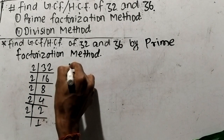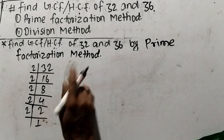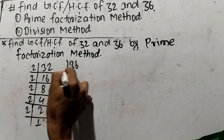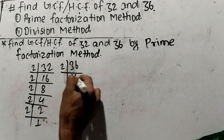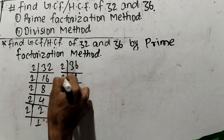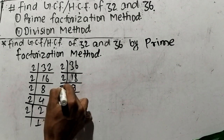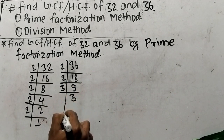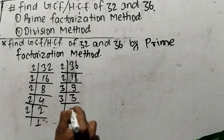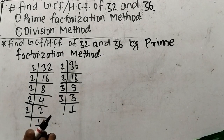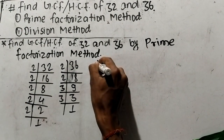In the same way we can find out the prime factors of 36. So it is 2 times 18 means 36, like as 2 times 9 means 18, and 3 times 3 means 9, and it is 3 times 1 means 3. So we have found out the prime factors of 32 and 36.